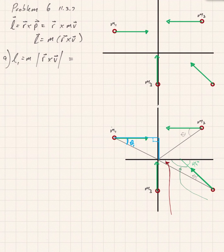So L1 is going to be m times r cross v, which is going to be m1 r1 v1 times sine theta 1. That's because the cross product between r and v is going to be r v times sine of the angle between them.